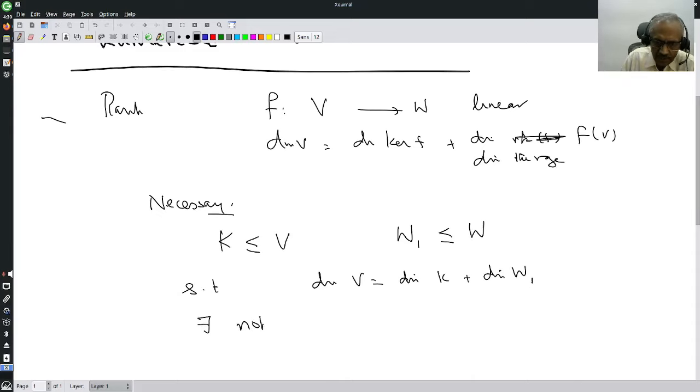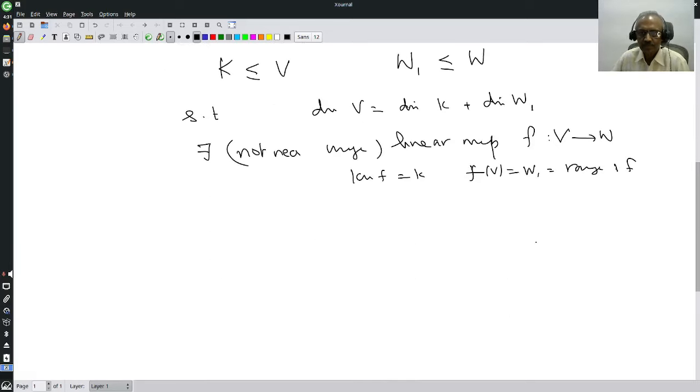...not necessarily unique, a linear map F from V to W, so that kernel of F is K, and F of V is W1.